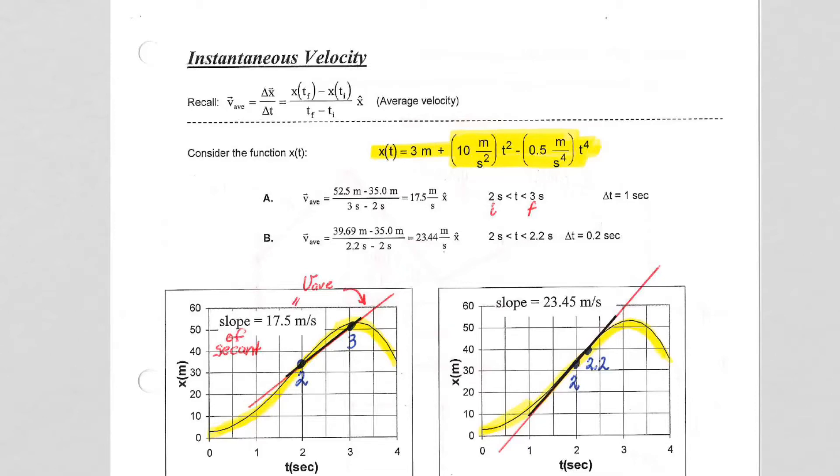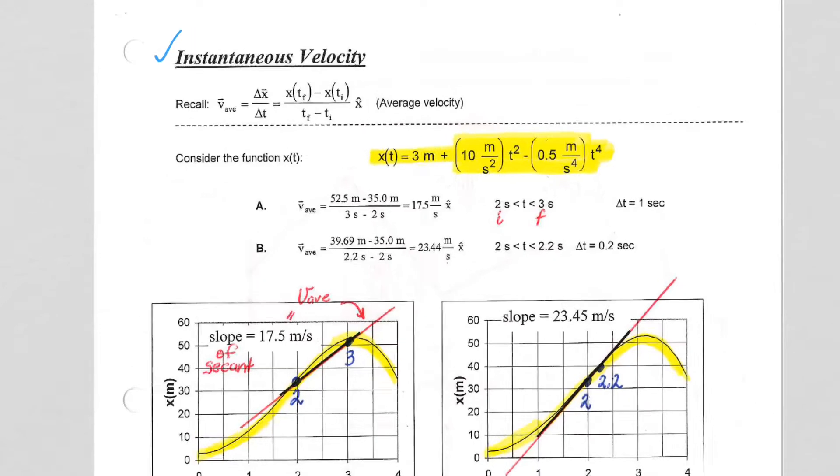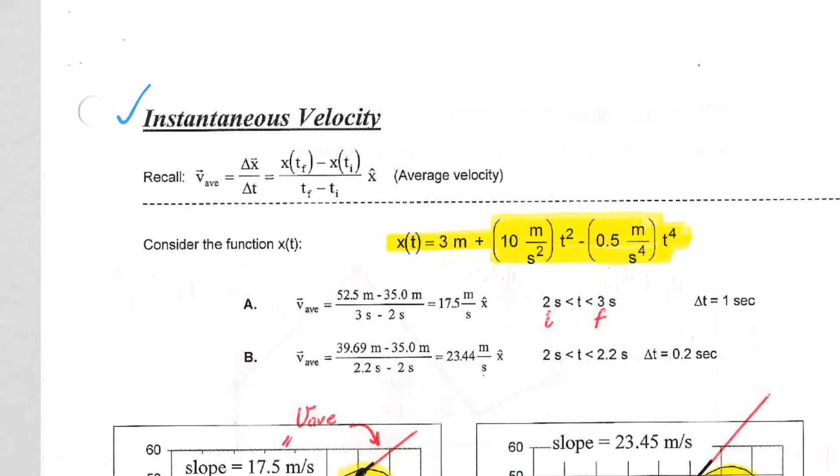In these notes, we're going to look at instantaneous velocity. We're going to do it through our equation and understanding of average velocity. As a reminder, average velocity is displacement divided by time.